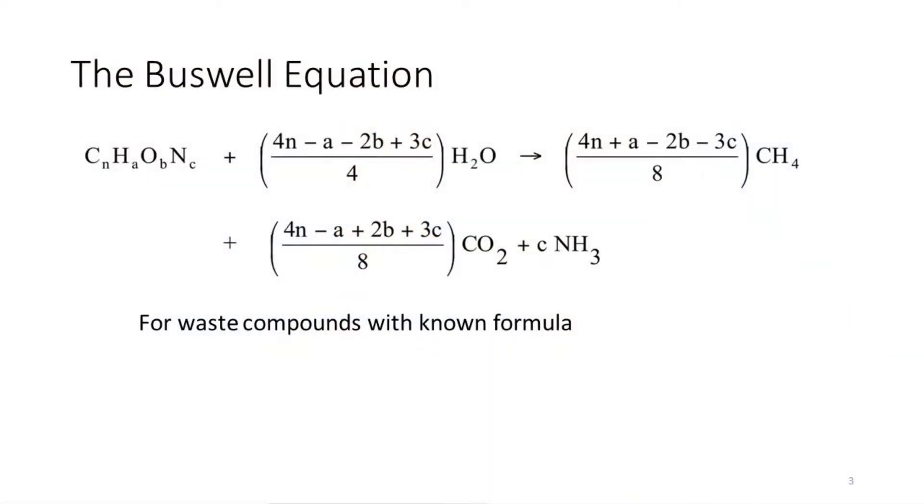A good equation to estimate how much biogas I can make is the Buswell equation. Now the Buswell equation starts from a given stoichiometry. This assumes that you know exactly the composition of the organic matter, the compound you're going to convert into biogas. And the Buswell equation starts from the amount of carbon, hydrogen, oxygen, nitrogen in your substrate and then you can make a stoichiometry to react with water to produce an amount of methane, an amount of CO2 and also liberate the nitrogen.